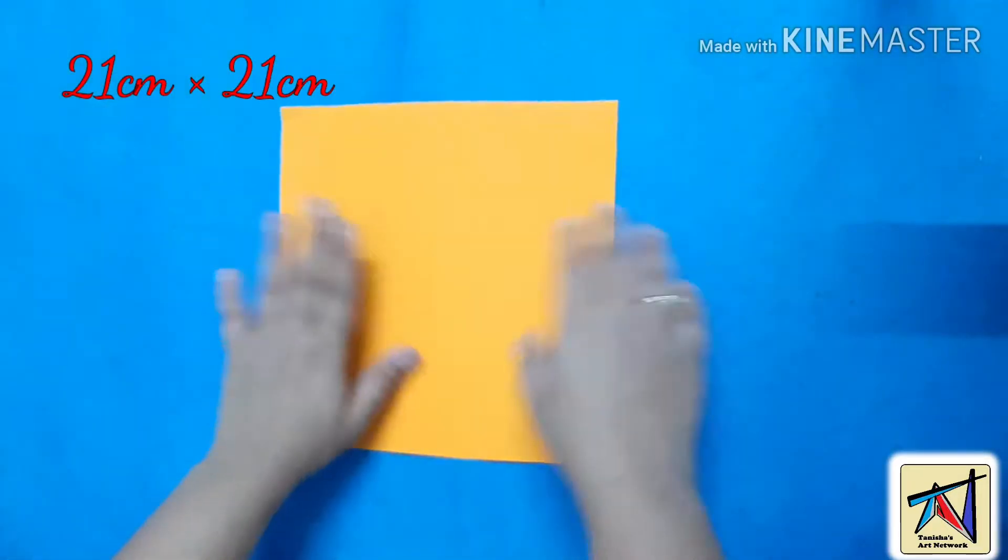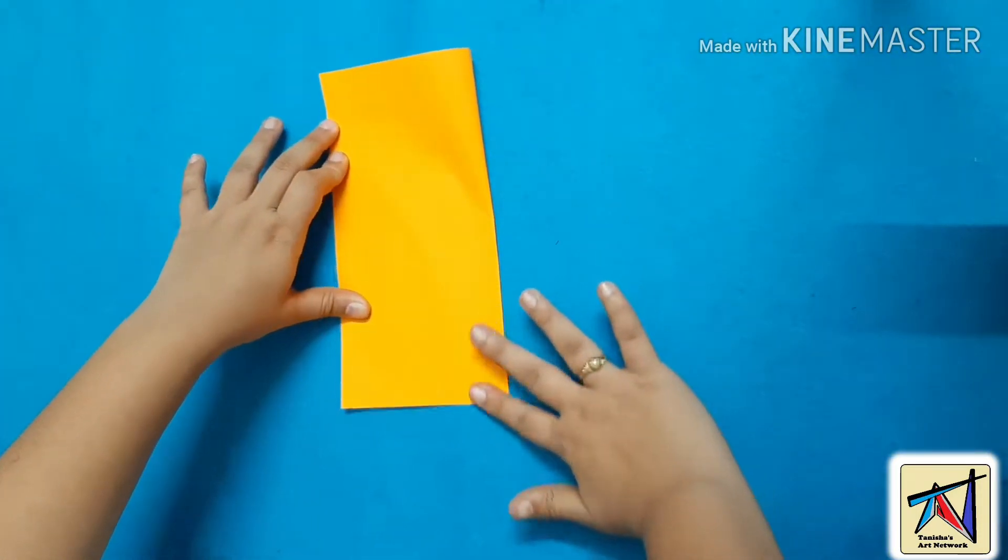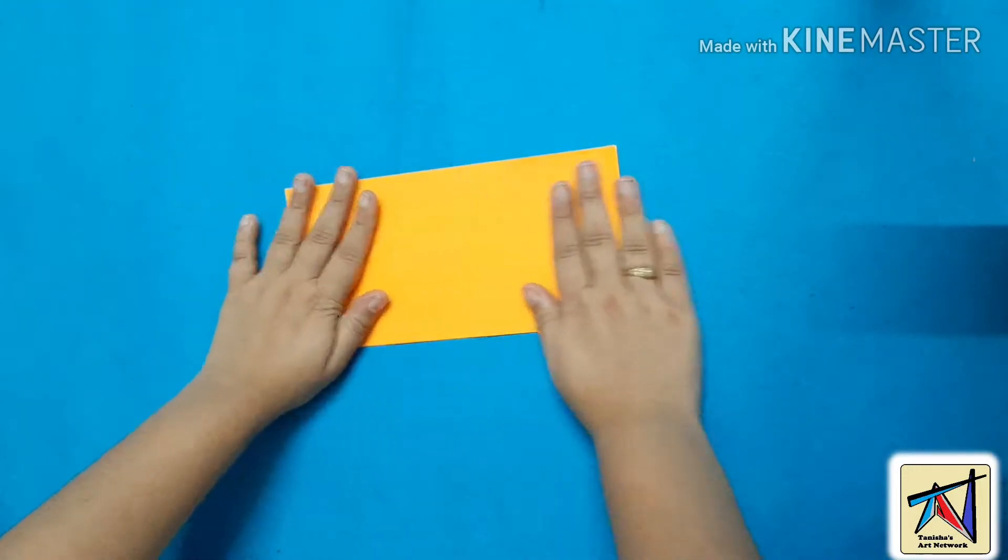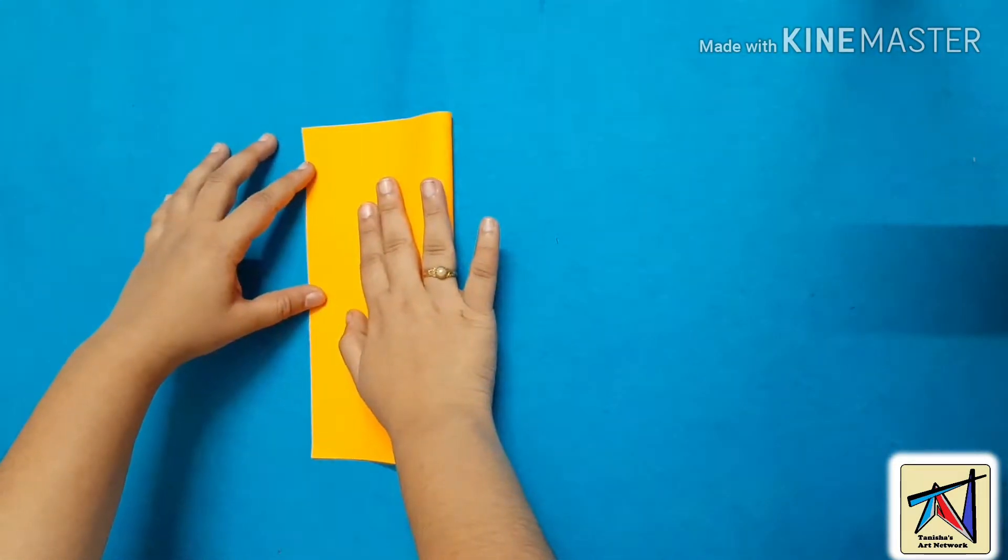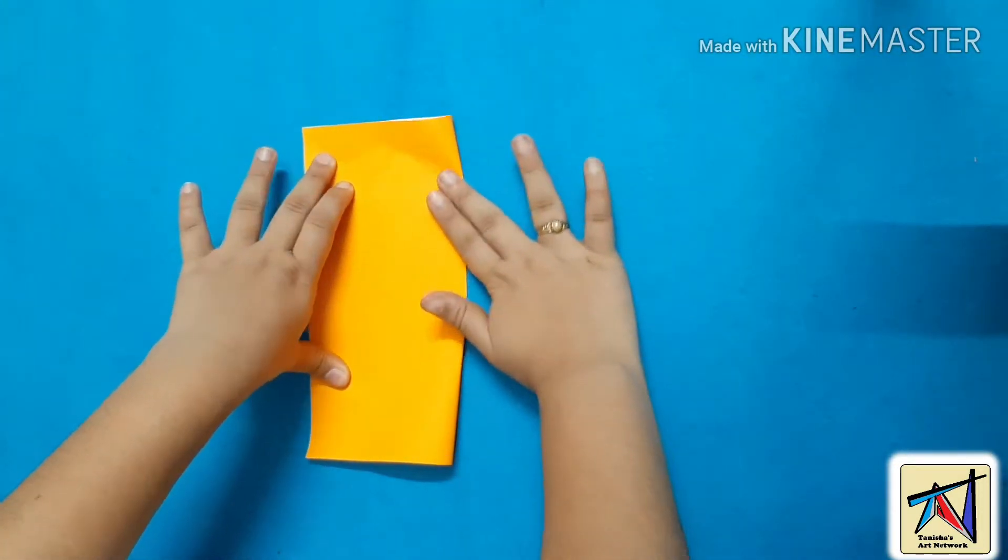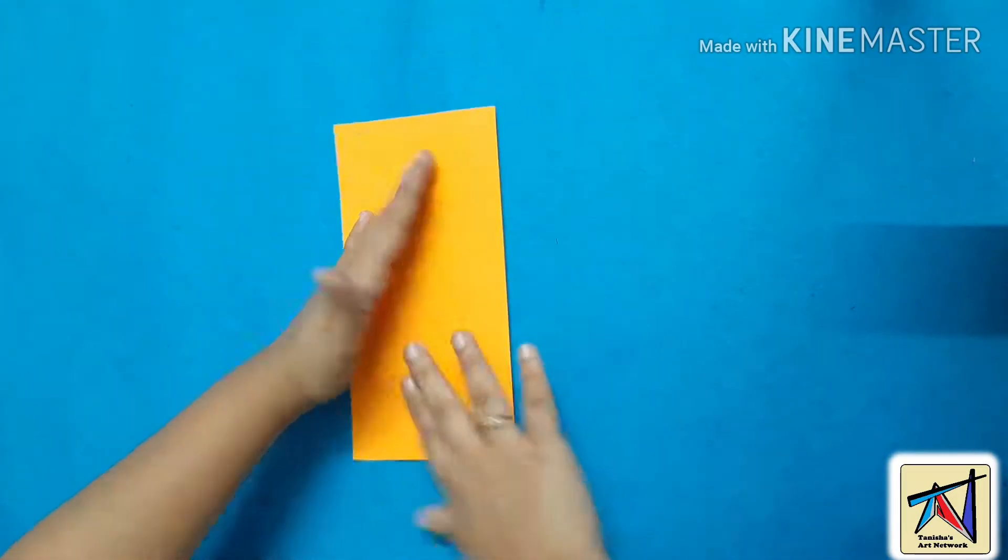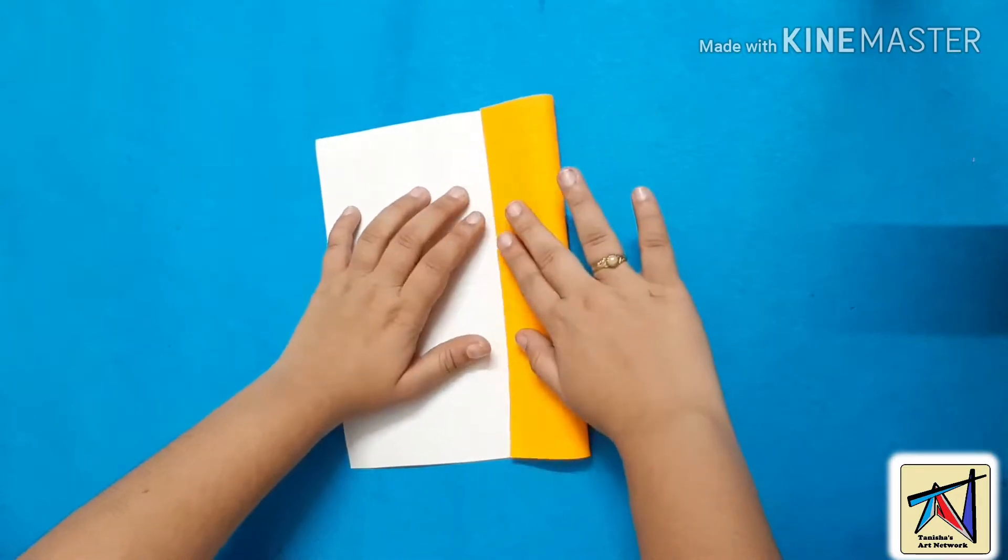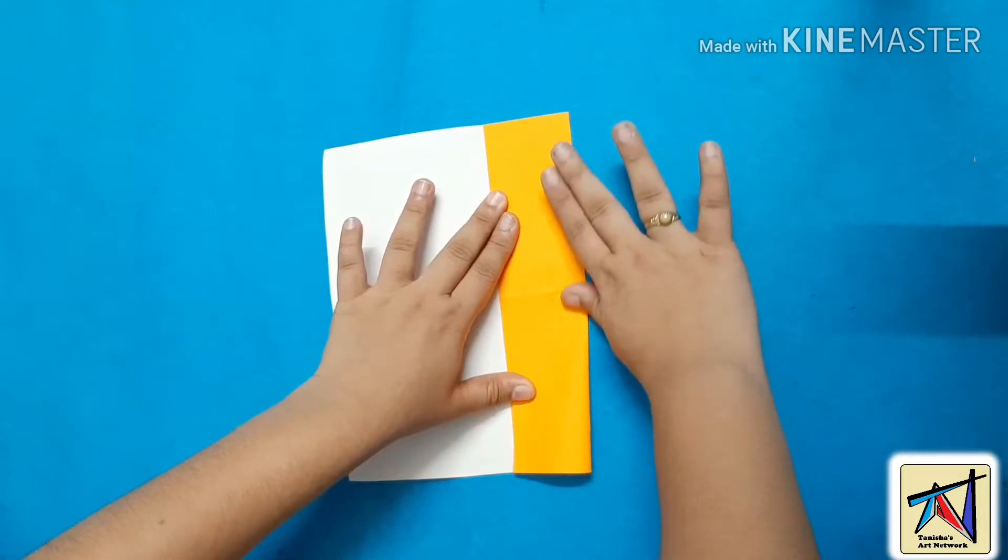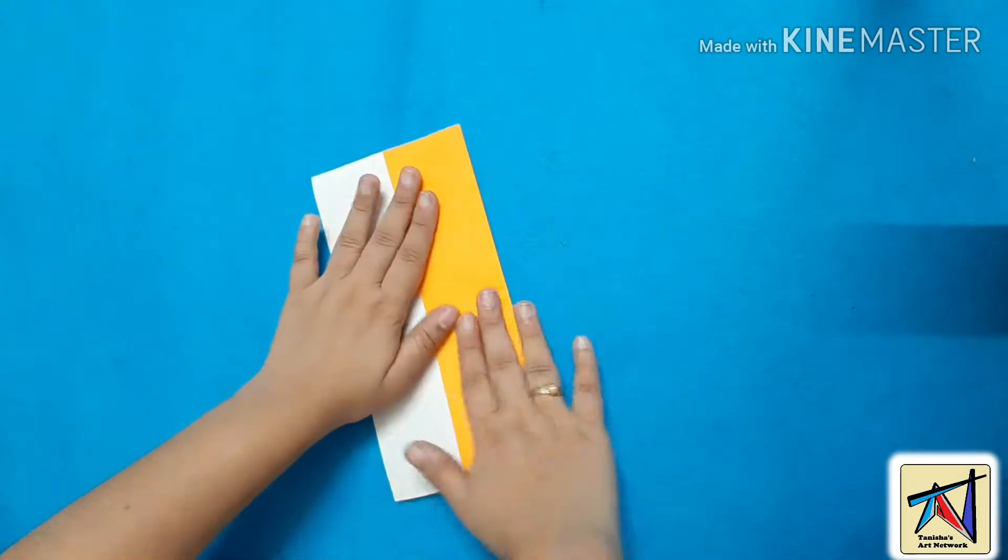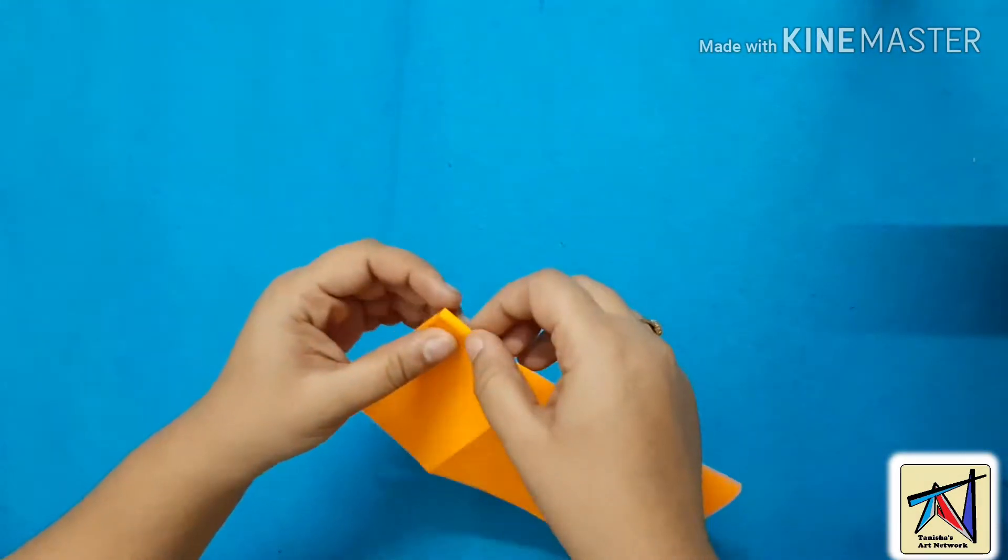I took a paper of size 21 centimeters by 21 centimeters. Start folding it as shown. You should take the size of the paper according to what size of heart you need.